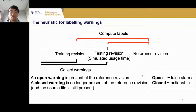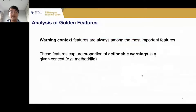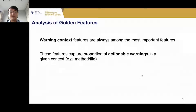Prior work assumes that open warnings are false alarms and closed warnings are actionable. One interesting class among the golden features is the warning context features, which capture the proportion of actionable warnings within a given context such as a method or file. The intuition is that if developers have historically fixed warnings related to a given method, then future warnings related to that method are more likely to be fixed.